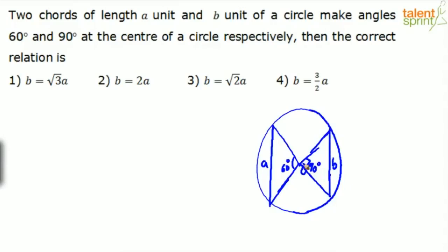We need to find the relationship between a and b. From the center of the circle to any point on the circle is equal to the radius. So from O to each endpoint of both chords is r — all four of these lines represent the radius.